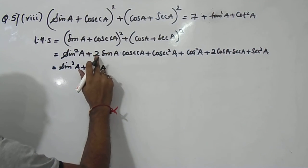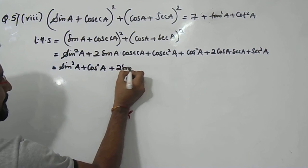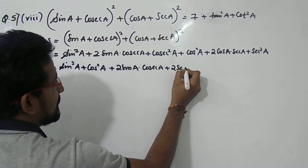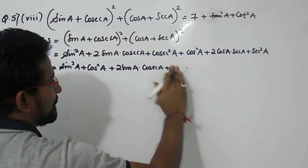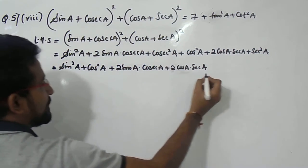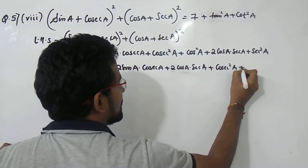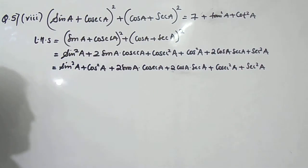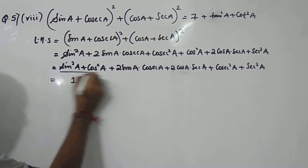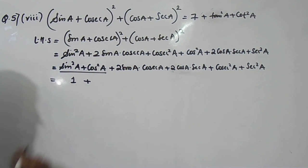We also write the middle terms: 2·sin a·cosec a and 2·cos a·sec a. Then we have cosec²a and sec²a. So after rearranging the terms, we have: sin²a + cos²a, plus 2·sin a·cosec a, plus 2·cos a·sec a, plus cosec²a plus sec²a. And sin²a + cos²a is nothing but 1.